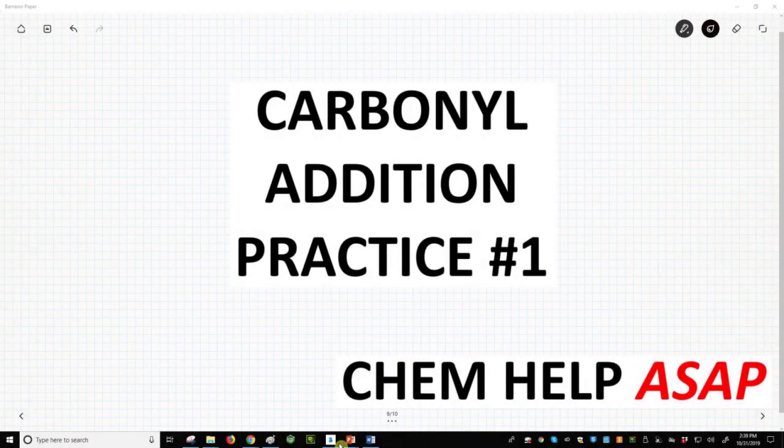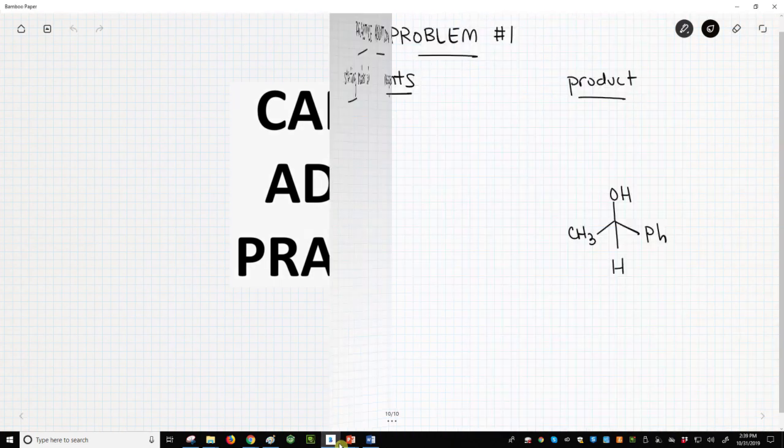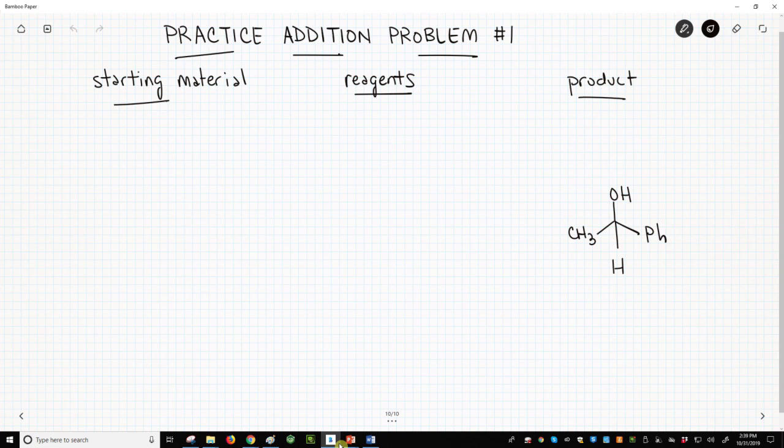Hello from Chem Help ASAP. Let's use a nucleophilic addition to a carbonyl to make a new alcohol. On the far right is an alcohol. We aren't given any reagents or starter materials. All we know is we need to make this alcohol through a nucleophilic addition onto a carbonyl. Well, that's a hint.